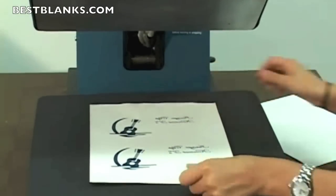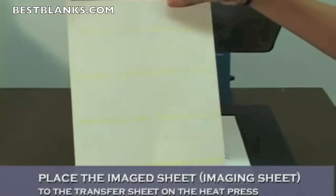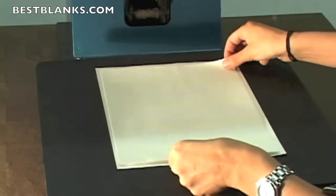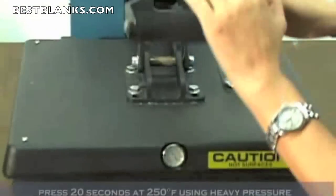The next step is to take the Image Clip transferring sheet and place it on top of the imaging sheet. You'll want to press this at 250 degrees for 20 seconds.